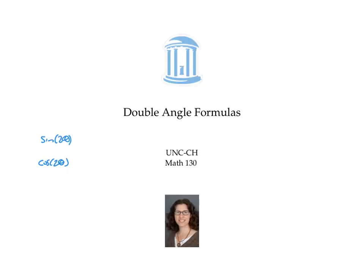This video proved the double angle formulas: sine of two theta equals two sine theta cosine theta, and cosine of two theta equals cosine squared theta minus sine squared theta. It also proved two alternate versions of the formula for cosine of two theta.